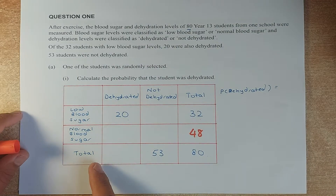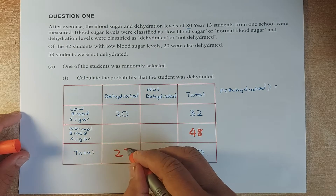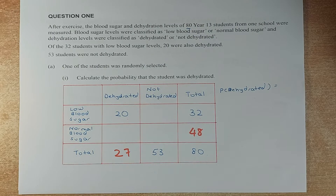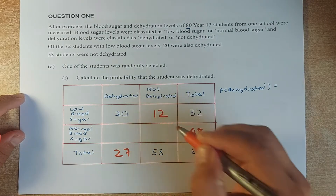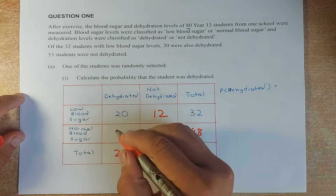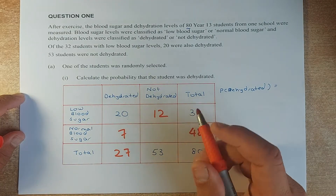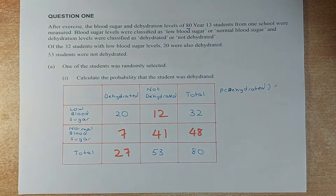Similarly, if not hydrated is 53, then hydrated must be 27, because 27 plus 53 gives you 80. Then filling in the other boxes: low blood sugar minus hydrated gives 12, 27 minus 20 is 7, and 53 minus 12 is 41.